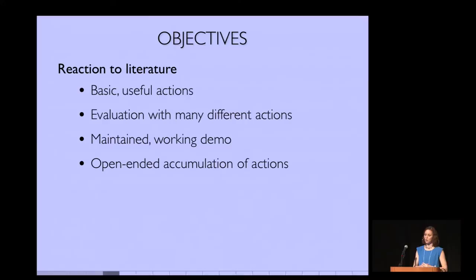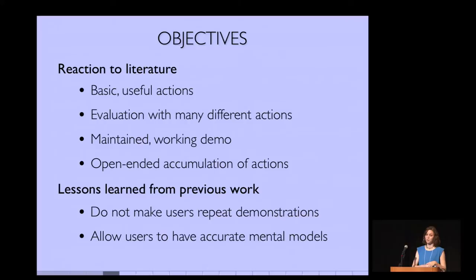For this particular paper, we basically had several objectives that were motivated by some of the empirical findings from doing a lot of user studies, but also some of the criticism that I mentioned earlier. So we wanted to focus on programming basic skills that give something useful to people and evaluate with lots of different actions. And we actually wanted to build a robot system that we can just continue using even after this paper is over and accumulate lots of robot actions over time. And secondly, we didn't want users to have to provide many, many demonstrations. This was suggested empirically over and over that people just don't want to repeat.